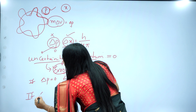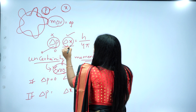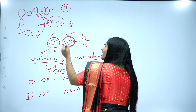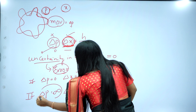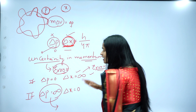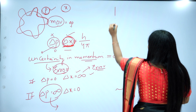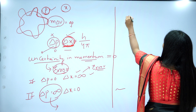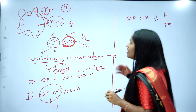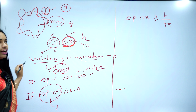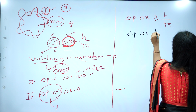Similarly, if delta x is equal to zero — there is no error — meaning you are finding the position exactly. Then momentum becomes infinity, which means you completely cannot find momentum. So the formula is: delta P into delta x is greater than or equal to h by 4 pi. But whenever you are solving numericals, you don't need to use the greater than symbol — you can directly take delta P into delta x is equal to h by 4 pi.